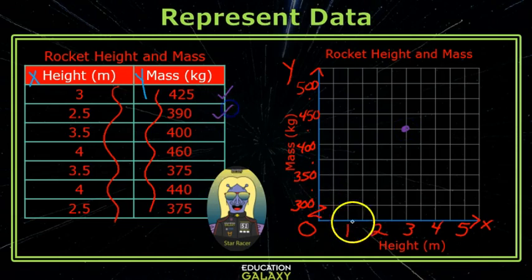The next dot is 2 and a half, 390. So I start at 0 and slide to the right until I come to 2 and a half, which is between 2 and 3.